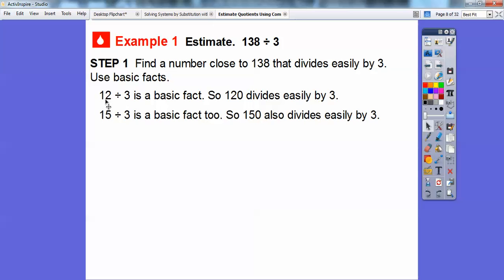So 12 is right below 13, so 12 divided by 3 is nice and easy. I can divide 12 divided by 3, that equals 4. So 120 divided by 3 can be easily done also. Same with 15. 15 is our next multiple of 3. 15 divided by 3 is easy, that's 5. So 150 is also easily divided by 3.